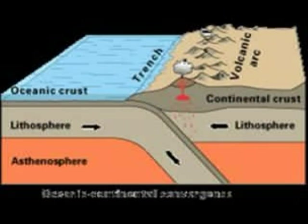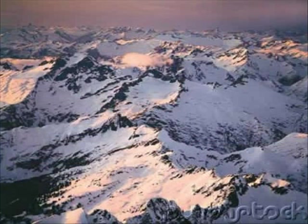In a continental-oceanic boundary, oceanic crust subducts into the continental crust because oceanic crust is denser. After it subducts, an ocean trench forms. Then the subducted lithosphere melts in the mantle and becomes magma. Because of that, a volcano forms at the edge of the continental crust. An example is the Cascade Range, which was made by a continental-oceanic boundary.